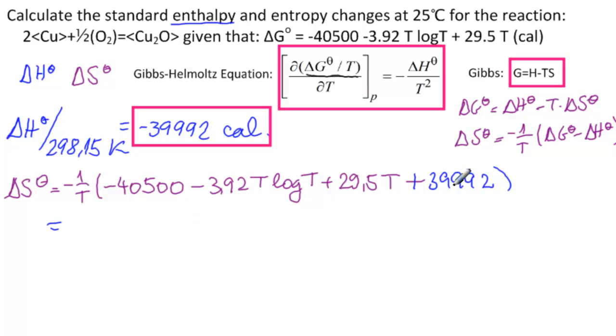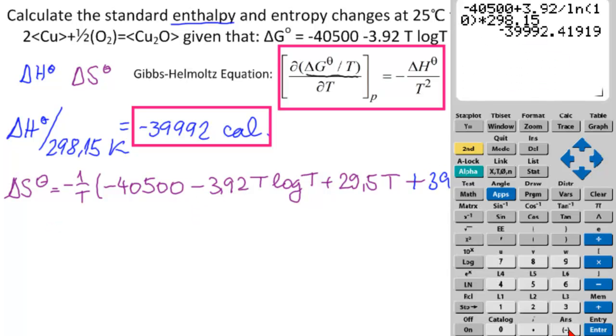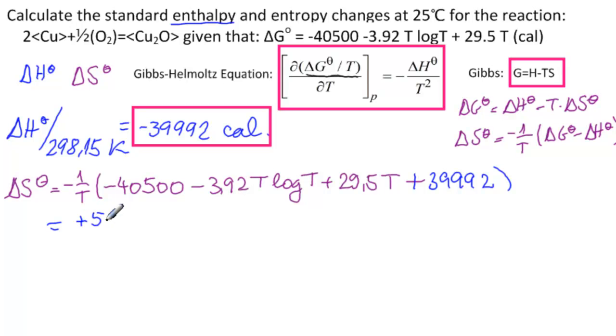The sum of these two is minus 40,500 plus 39,992, which equals minus 508. So we have plus 508 over T minus 3.92 log T plus 29.5.